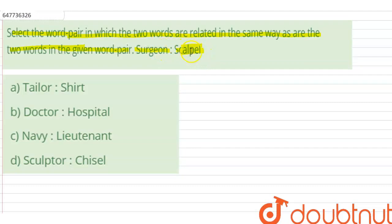Our options are: A, tailor is to shirt; B, doctor is to hospital; C, navy is to lieutenant; or D, sculptor is to chisel.